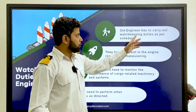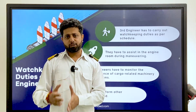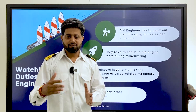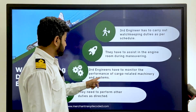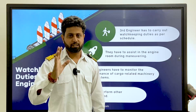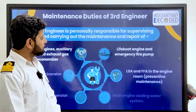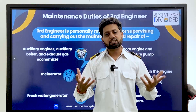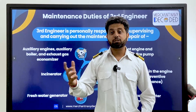Third engineer has to carry out watch keeping duties as per schedule. On a UMS ship, every alternate day or after every two days you are doing a watch. When maneuvering is happening on your day — when the ship is entering port — you have to come for maneuvering as well. You need to monitor performance of cargo-related machineries and systems, and perform other duties as directed by the chief engineer or second engineer.